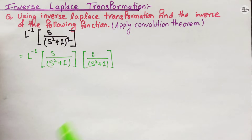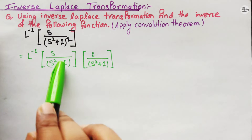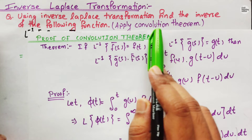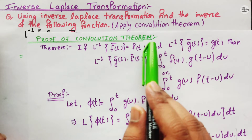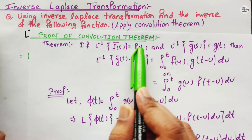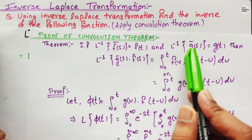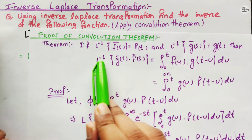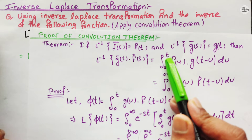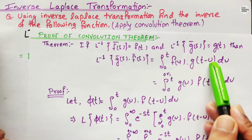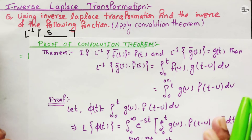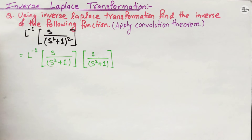You may have a question: why have we split this into two different functions? Since we are asked to solve this problem using the convolution theorem, the convolution theorem states that if the inverse Laplace transformation of F(s) equals f(t) and inverse Laplace transformation of G(s) equals g(t), then the inverse Laplace transformation of G(s)·F(s) equals the integration from 0 to t of f(u)·g(t − u) du, or integration from 0 to t of g(u)·f(t − u) du. That is why we split this.